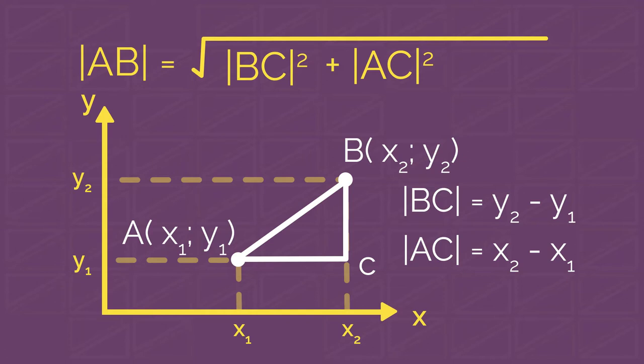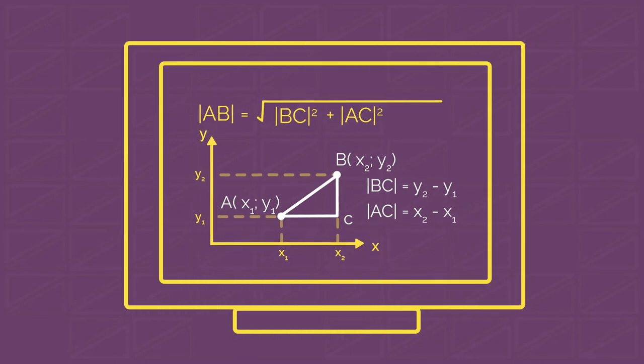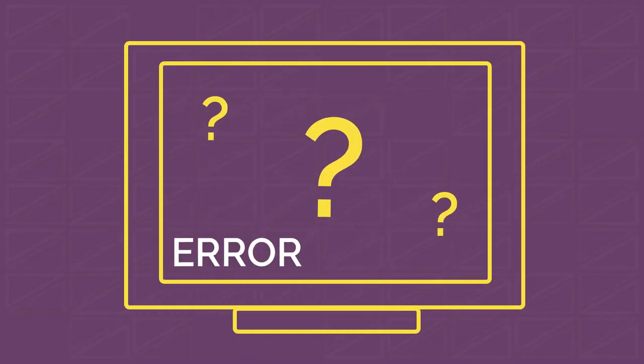So why did we do all these strange things? Because now we can find the distance between objects even without drawing them. You may say, but we like drawing graphs, it's fun. Well, not everyone likes pictures. For example, computers hate pictures because they don't even understand what they're looking at.